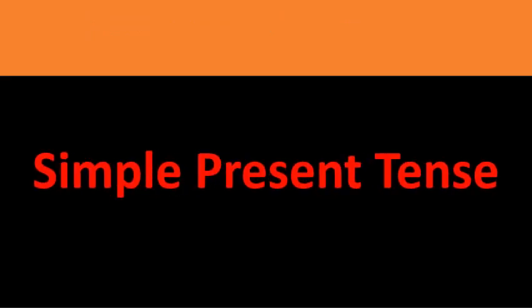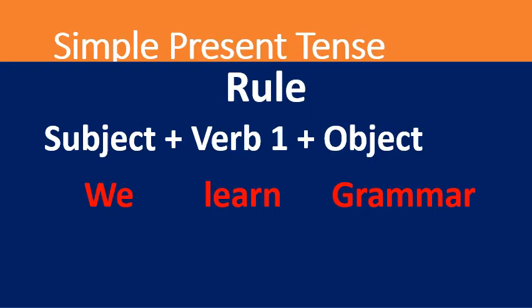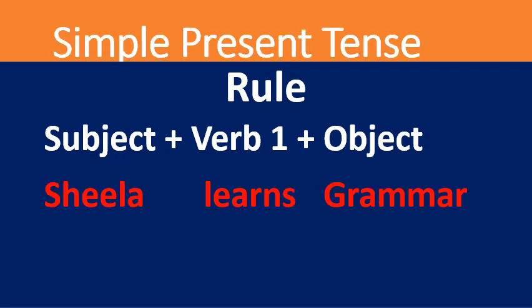Now I take you to simple present tense. We use simple present tense when an action is happening right now or when it happens regularly. The rule is: subject + verb in the first form + object. For example, 'We learn grammar.' Here 'we' is the subject, 'learn' is the verb in the first form, and 'grammar' is the object. If the subject is singular, we add S or ES to the first form of the verb, depending on the verb.